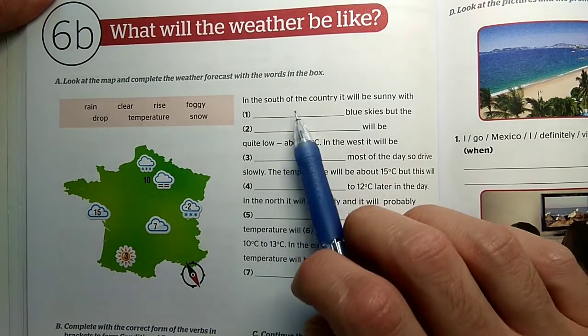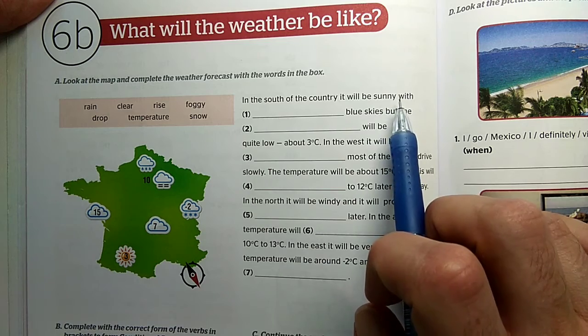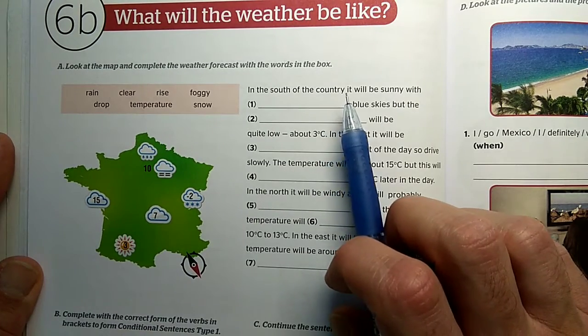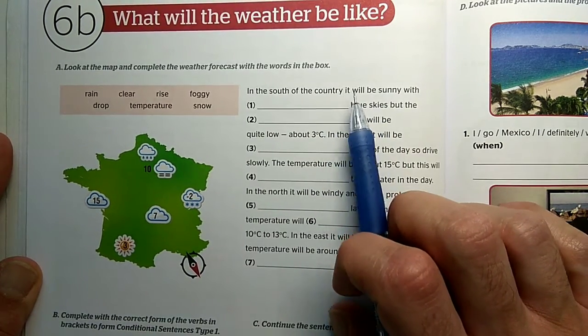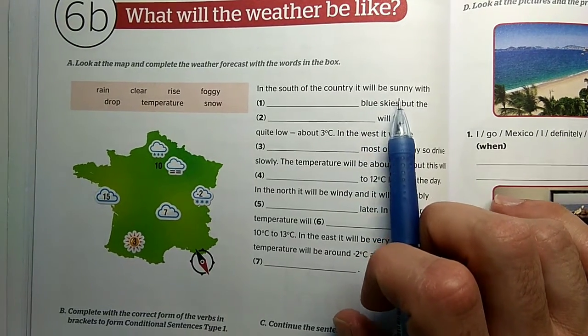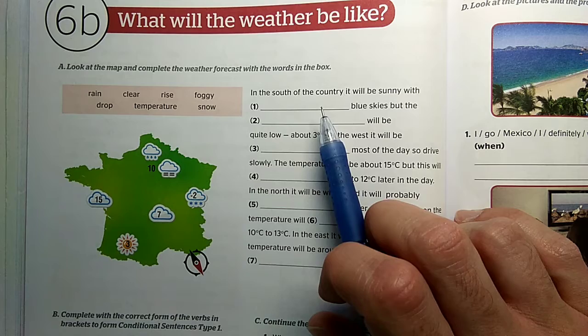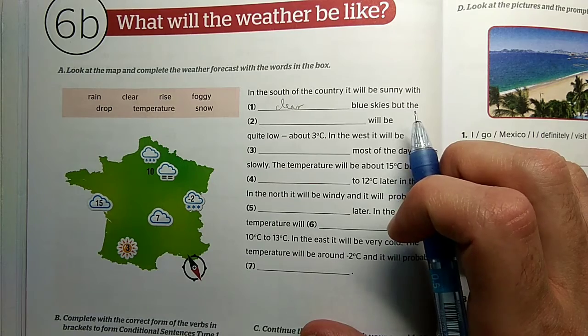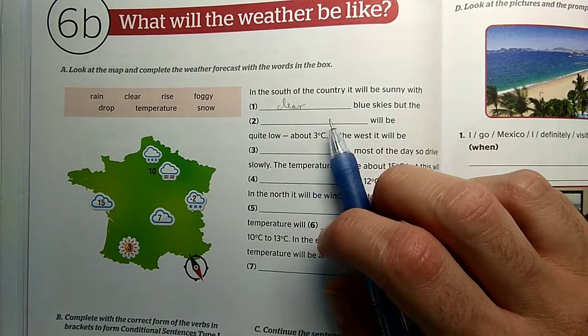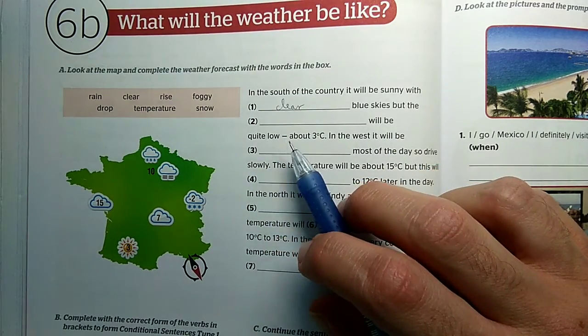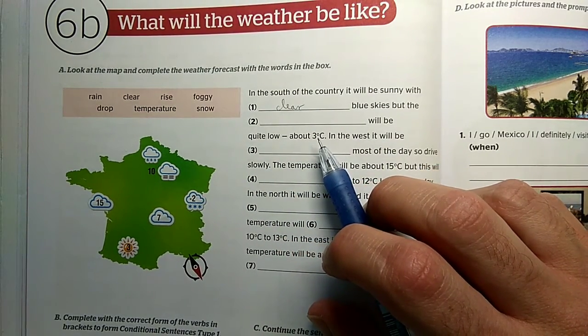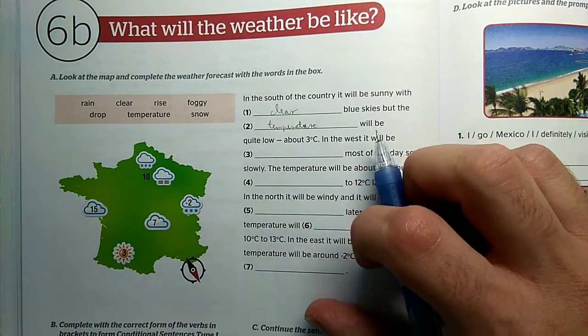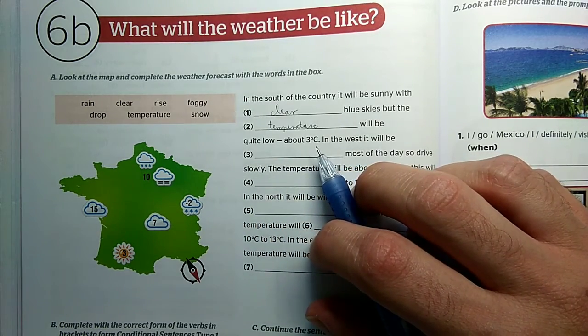In the south of the country it will be sunny with some blue skies. In the south, the weather will be sunny with some kind of blue skies, with clear blue skies. But the temperature will be quite low, about 3 degrees, so the temperature will be low. But the temperature will be quite low, about 3 degrees, 3 degrees Celsius.